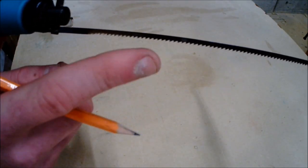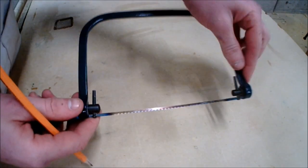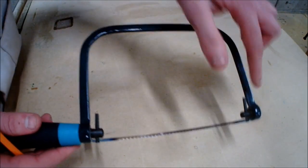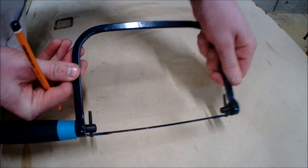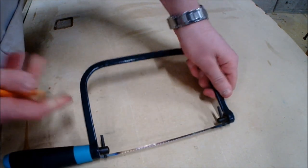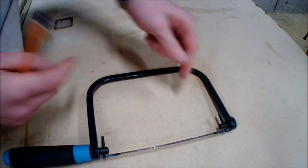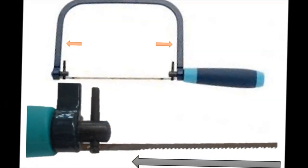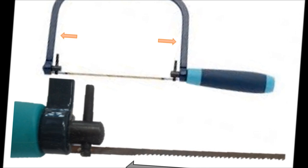If the teeth were facing the opposite direction, the blade would begin to compress because you are providing pressure with the frame as the teeth would be facing the opposite direction. That's why the teeth face backward toward the handle, as this is where it provides the tension.